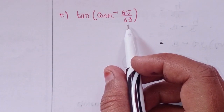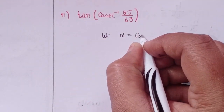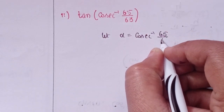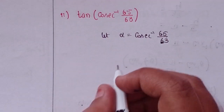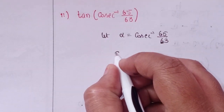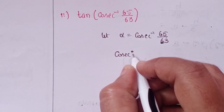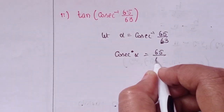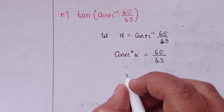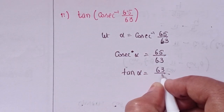Second problem: tan of cosecant inverse 65 by 63. Let cosecant inverse 65 by 63 equal to alpha. So cosecant alpha equals 65 by 63. Automatically, tan alpha equals 63 by 16.